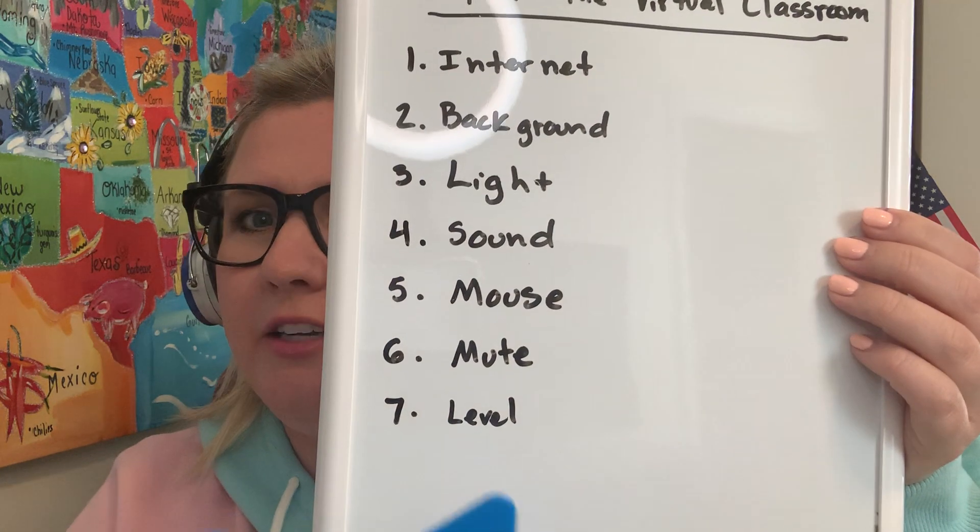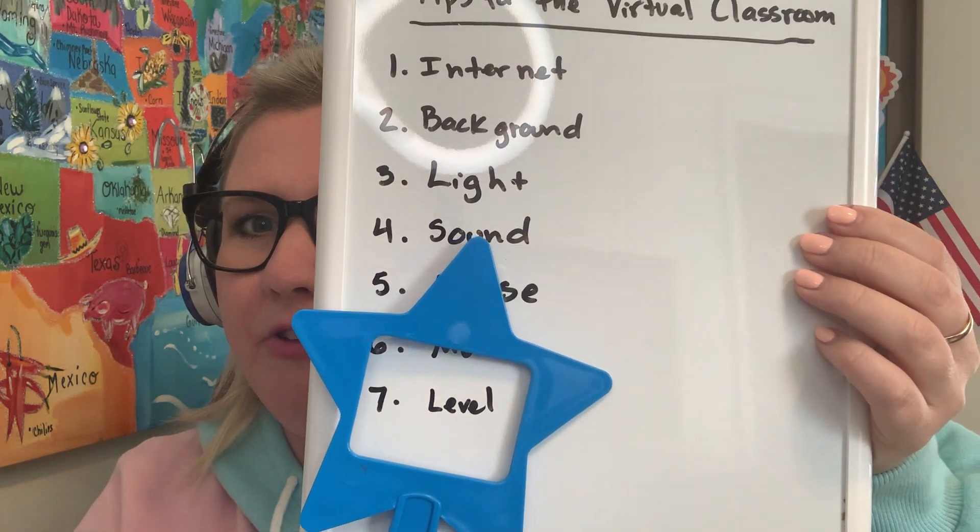And finally, number seven: keep it level. You want your camera to be level with your face and your eyes. A good suggestion is to just take a box or a shoebox and put your laptop on top of it. That way your camera is right at eye level instead of getting this double-chin look all through class.